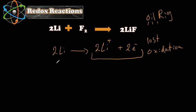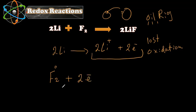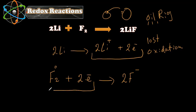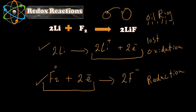Now for fluorine: F2 starts at zero. Lithium lost one electron and fluorine gains that electron. Fluorine gains two electrons total because we have two atoms each gaining one. So: F2 plus two electrons gives 2F⁻. The electrons are on the left side — before the arrow — so fluorine gained electrons. OIL RIG: reduction is gaining. This is the reduction half equation.